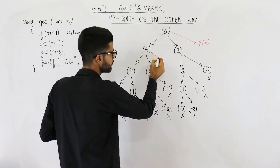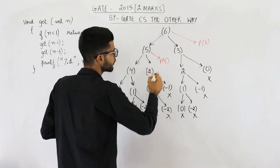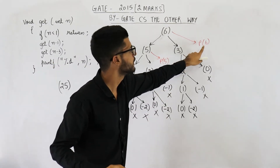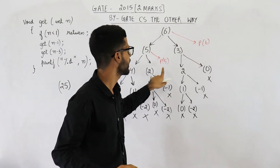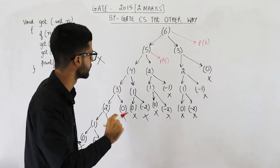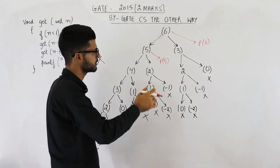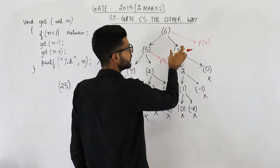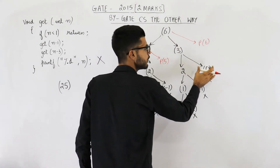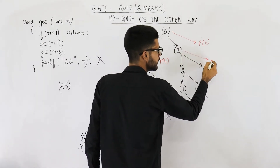Here, what will happen? Get(5) is going to print 5. So I'm just writing the number — because we want to save space. This function call is for get(3), so it will call two functions and then it will print 3.